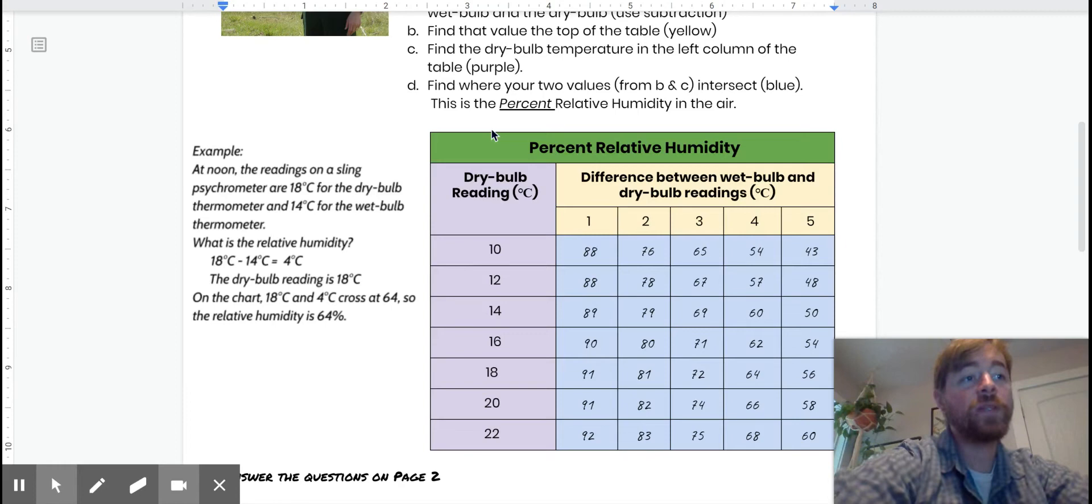Let's do a little example. It's noon and the readings on the sling psychrometer are 18 degrees for the dry bulb, that's the actual air temperature, and 14 degrees Celsius for the wet bulb, that's the difference because of evaporation. First we subtract, that's part A, 18 minus 14 is four degrees Celsius. So we find our difference of four and our temperature of 18 degrees Celsius. We follow this row over to the column for four and we see that our relative humidity was 64%. So that means that 64% of the water that could be in the air is in the air. We could get 36% more water in the air before the air became totally saturated, totally full of water, all it could hold.